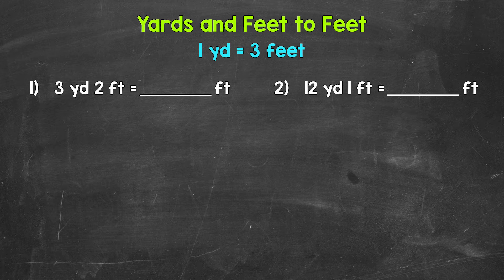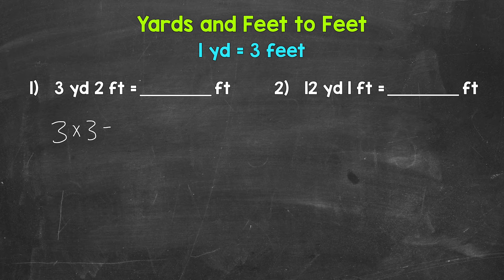Again, one yard equals three feet. So to convert three yards to feet, we need to multiply by three. Three times three gives us nine. Three yards equals nine feet.